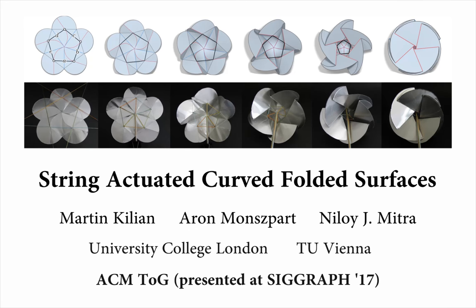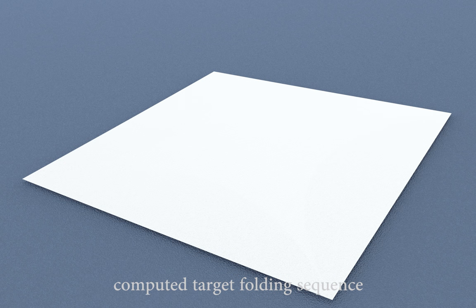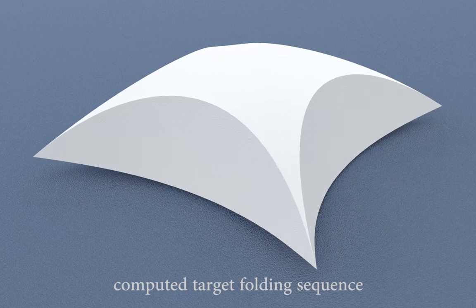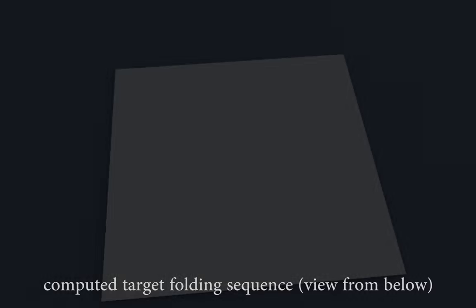Curved folded surfaces hold a special place in computational origami. We introduce string-actuated curved folded surfaces that can be shaped by pulling a network of strings, vastly simplifying the process of creating such surfaces and making the folding motion an integral part of the design.